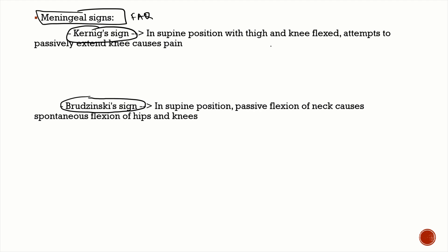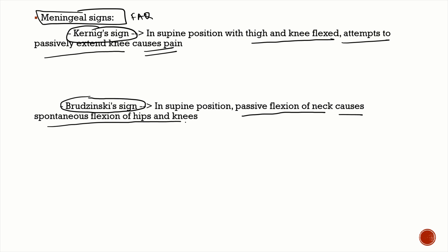In Kernig's sign, the thigh and knee are fully flexed and any attempt to passively extend the knee causes pain. In Brudzinski's sign, passive flexion of the neck causes spontaneous flexion of the hips and knees. These are two very important meningeal signs to remember.